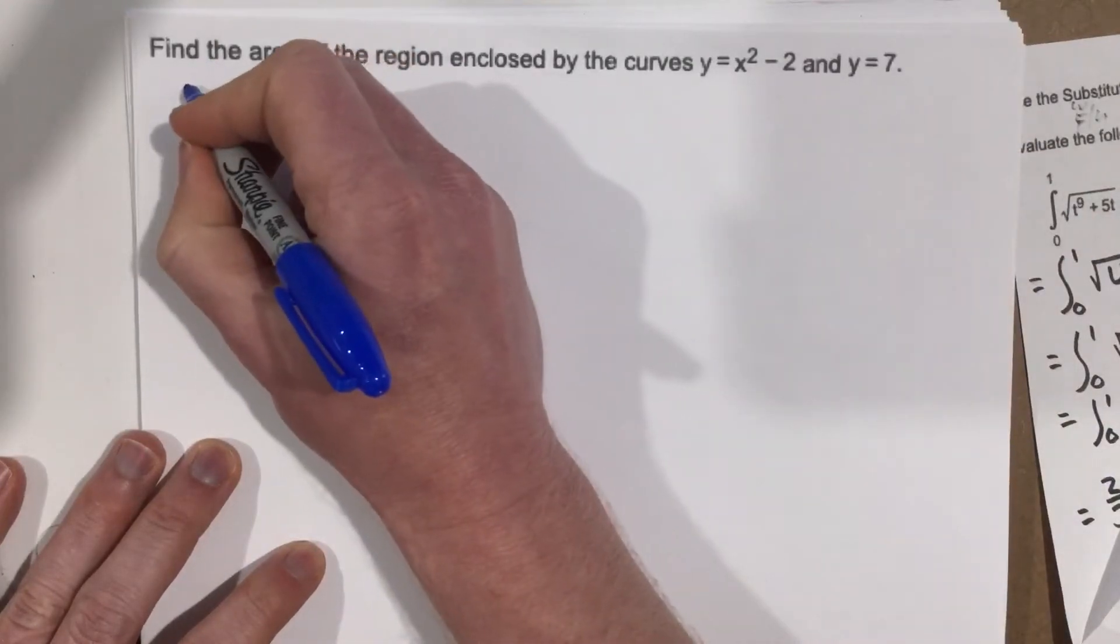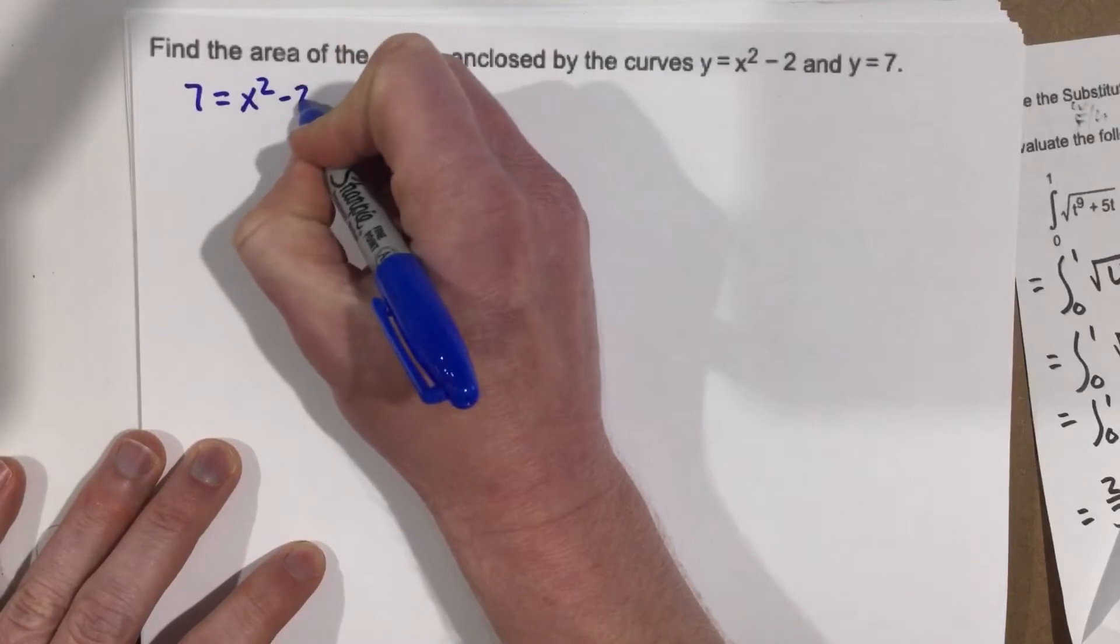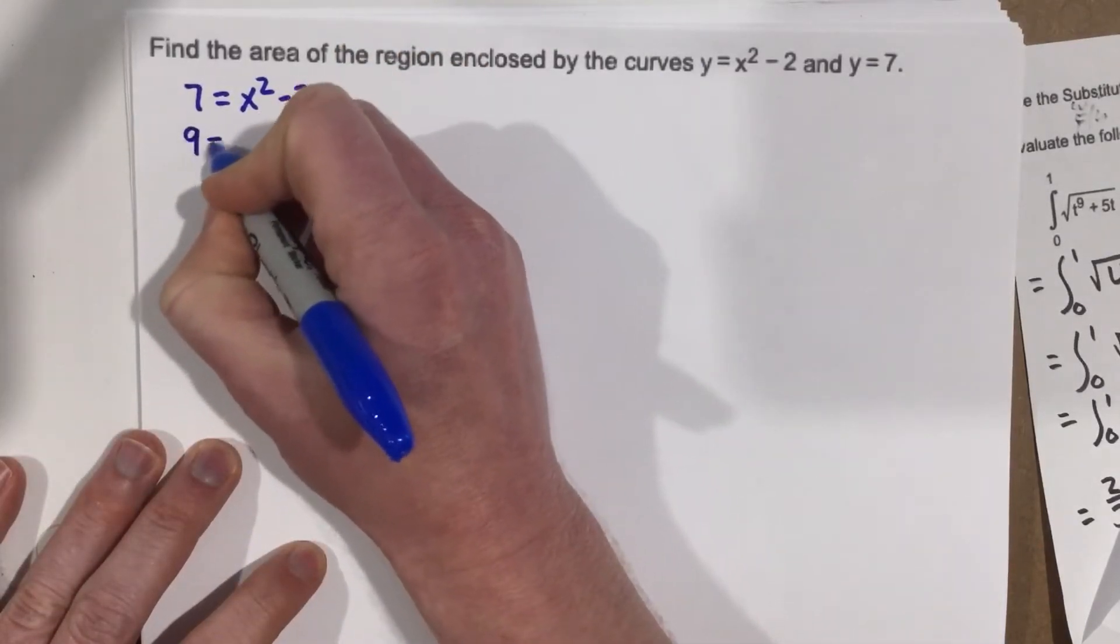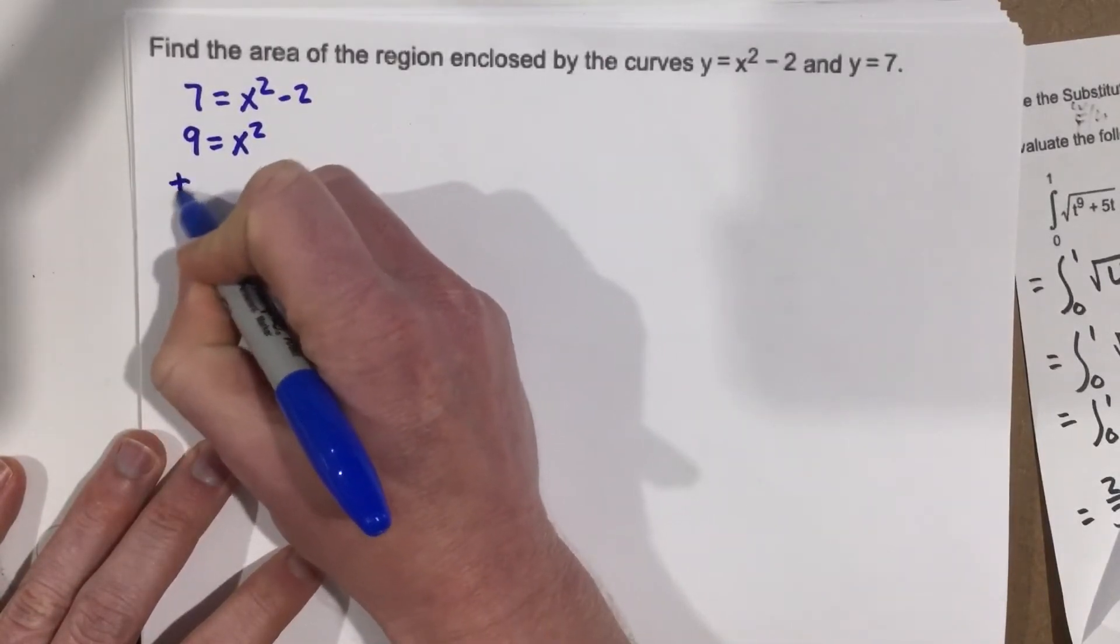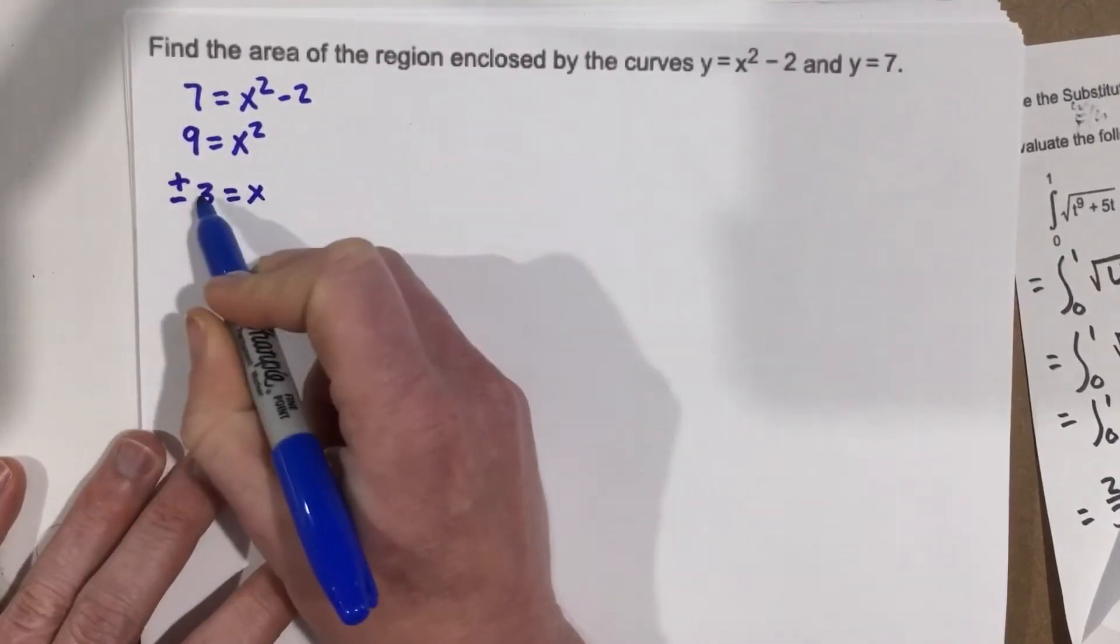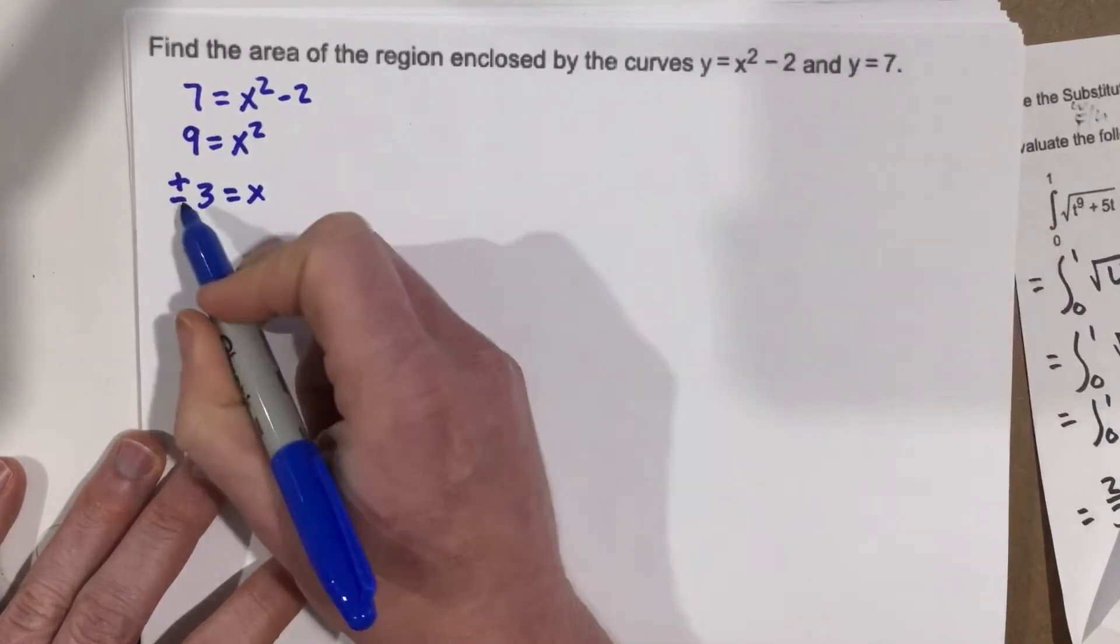So we're going to say 7 equals x squared minus 2. Add the 2 over. That's 9 equals x squared. Square root each side. We get plus and minus 3 equals x. So that tells us that our roots or our areas that we cross, right, our solutions are plus and minus 3.